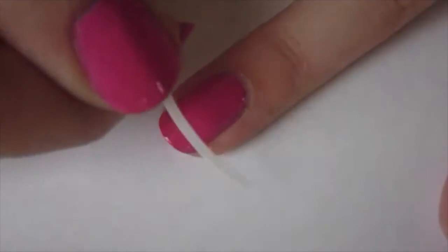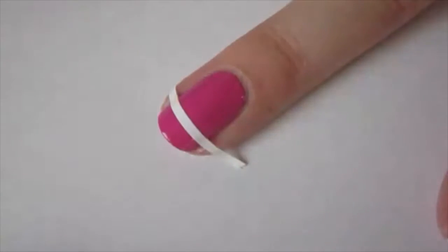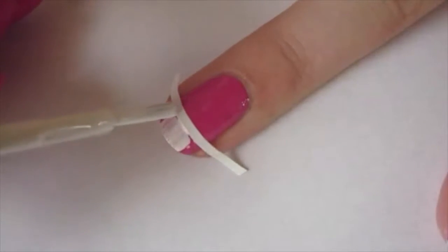I waited until my nails were completely dry, but you can also use a quick dry top coat to speed along the process. Then I applied a French tip vinyl right at the bottom of my nail and filled in that bottom portion with white polish.